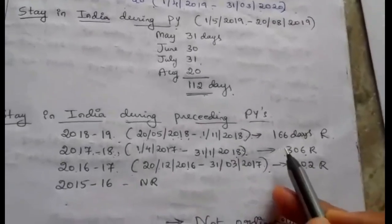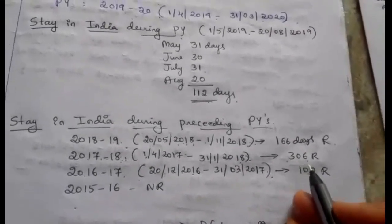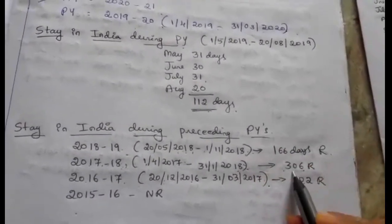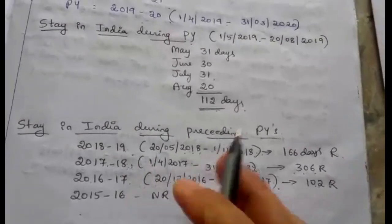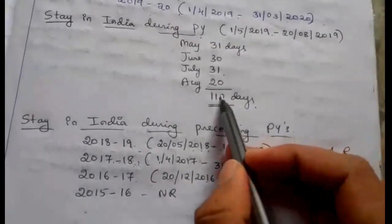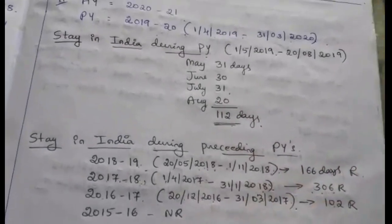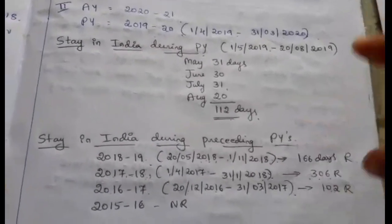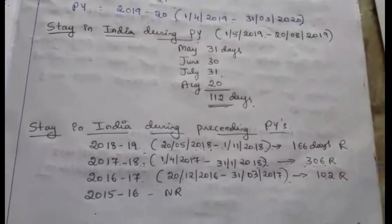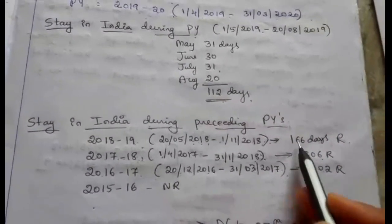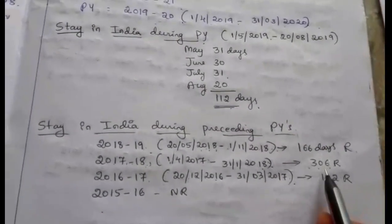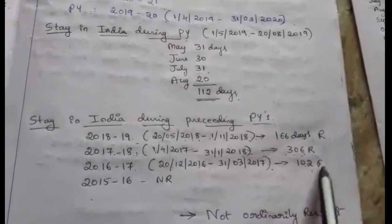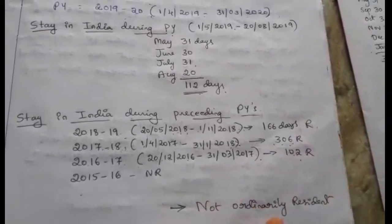So totally: 166 plus 306 plus 102 days - more than 365 days. And 306 plus 102 = 408 days, which means more than 730 days... actually 306 plus 102 means he satisfies the condition. He becomes not ordinarily resident.